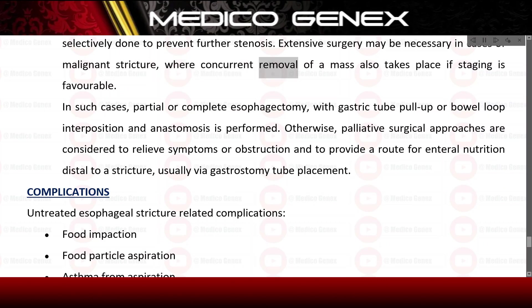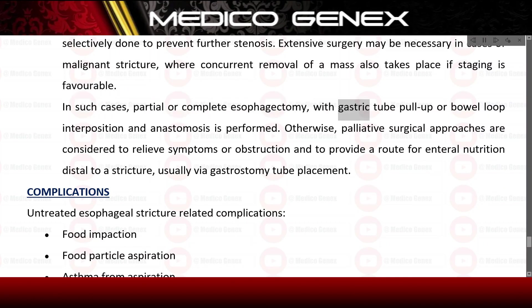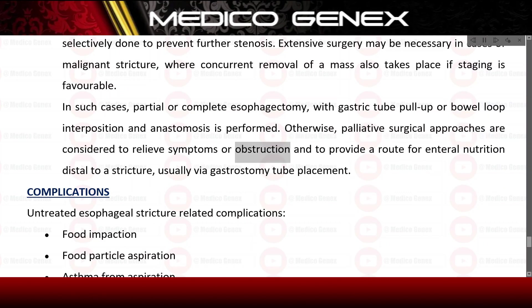Extensive surgery may be necessary in cases of malignant stricture where concurrent removal of a mass also takes place. If staging is favorable, partial or complete esophagectomy with gastric tube pull-up or bowel loop interposition and anastomosis is performed. Otherwise, palliative surgical approaches are considered to relieve symptoms or obstruction and to provide a route for enteral nutrition distal to the stricture, usually via gastrostomy tube placement.